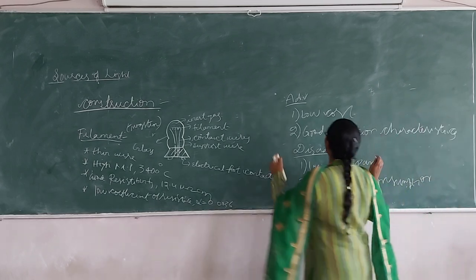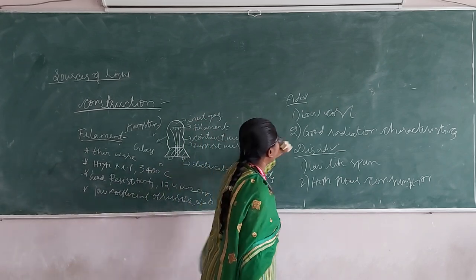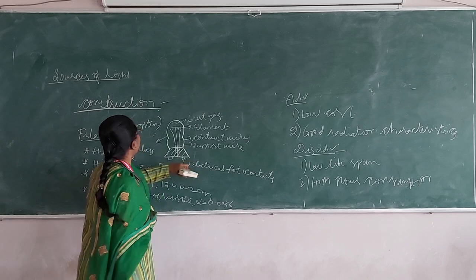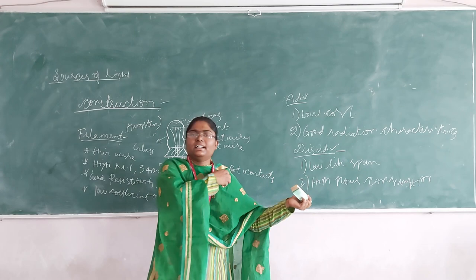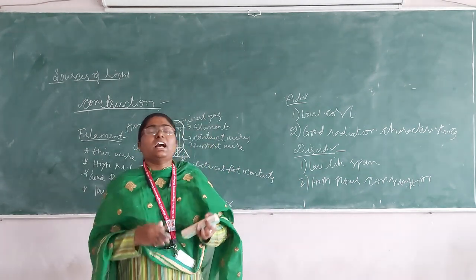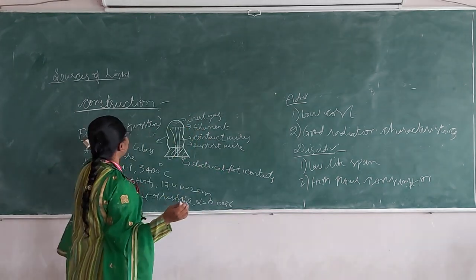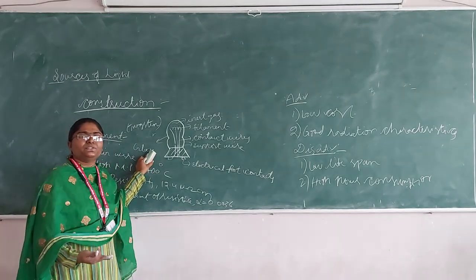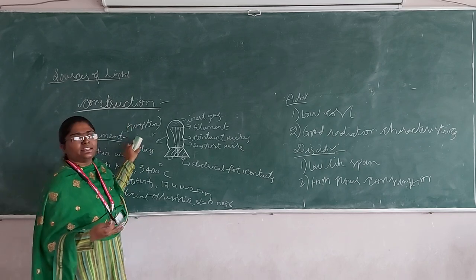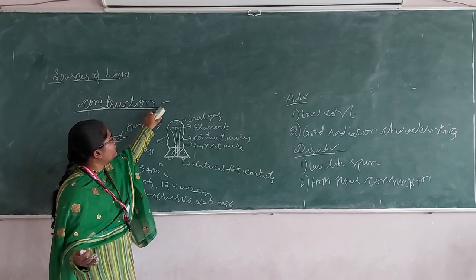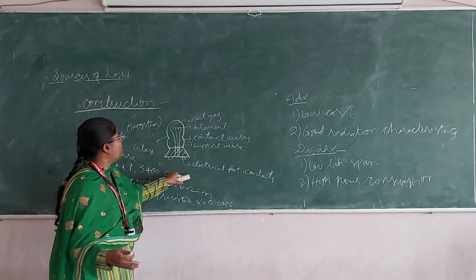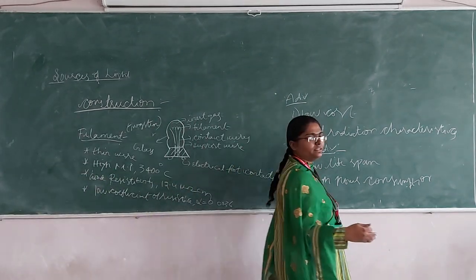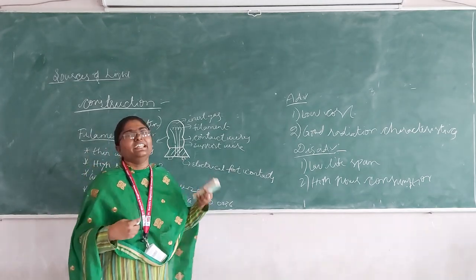This is about the incandescent lamp. What we have seen till now: sources of light — there are three artificial sources of light: incandescent lamp, arc lamp, and discharge lamp. Today we have discussed the incandescent lamp, which was discovered by Thomas Alva Edison. An object produces light due to the heating effect — that is why it is known as an incandescent lamp. We discussed its construction, working, advantages, and disadvantages. The next concept — arc lamp — we will discuss in the next class. Thank you.